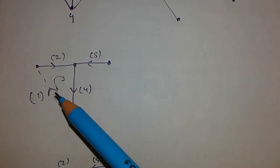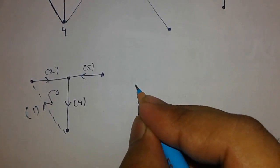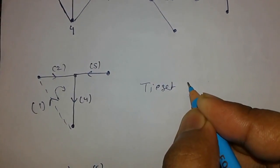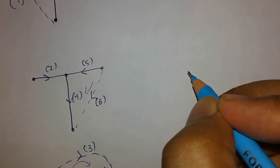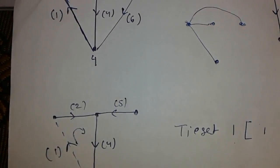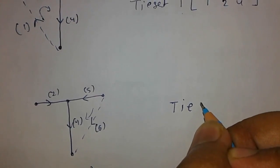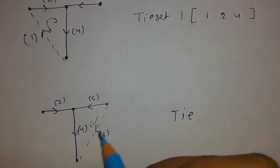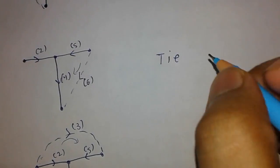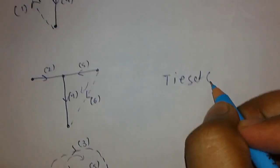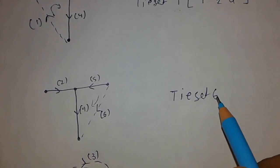As you can see, I have joined edge one here, so I take the direction of that edge. I write tie set one and just follow the direction: one, two, four. Now for edge six, I join it to the spanning tree. You have to consider the effect of only one edge at a time. By connecting edge six, I am getting this tie set, so tie set six is equal to six, four, five.